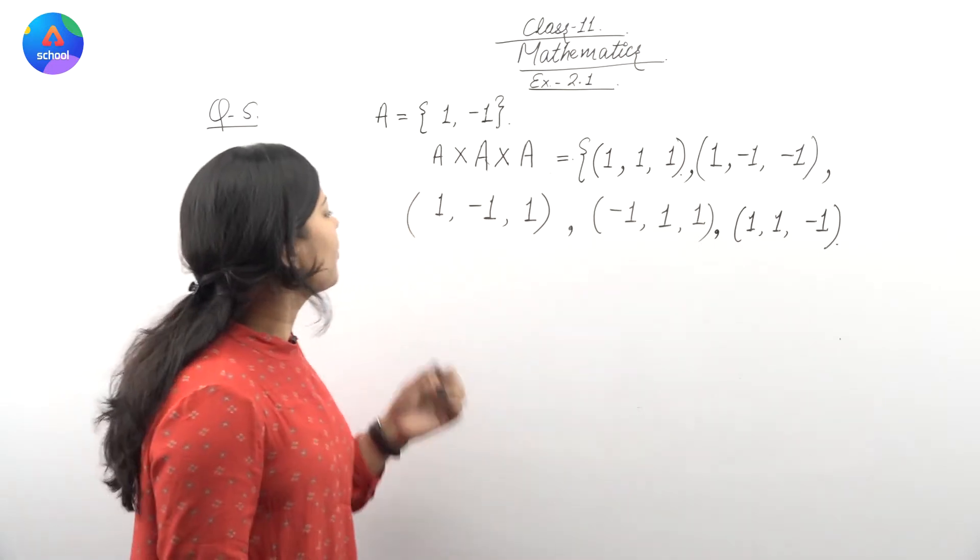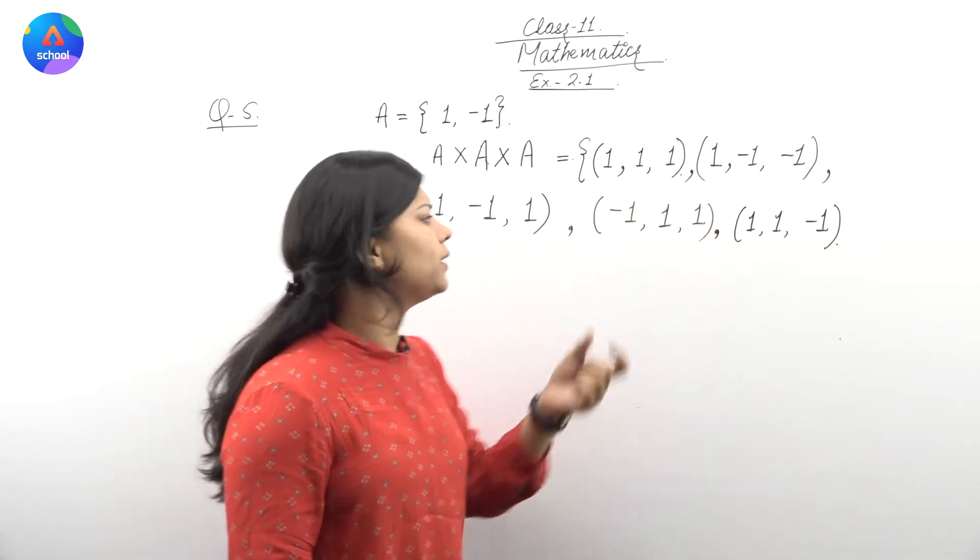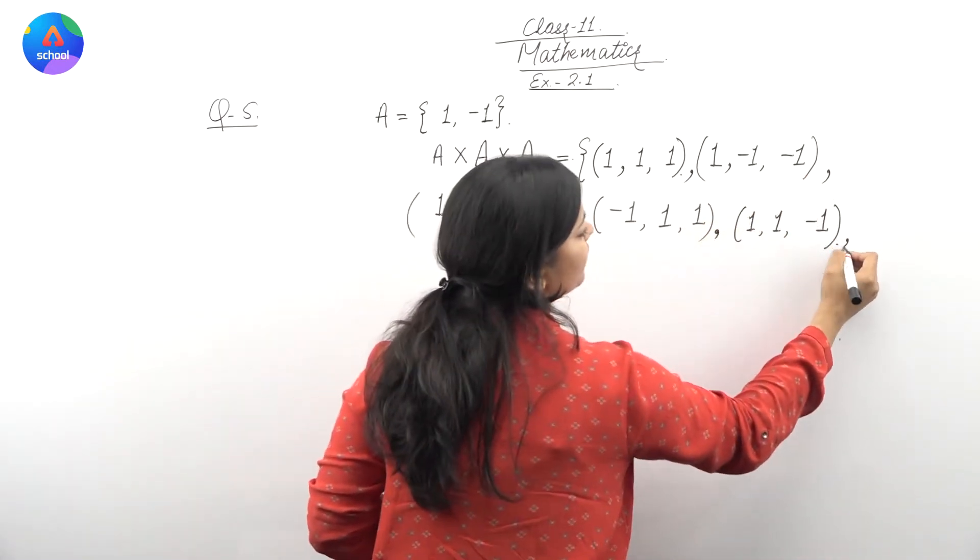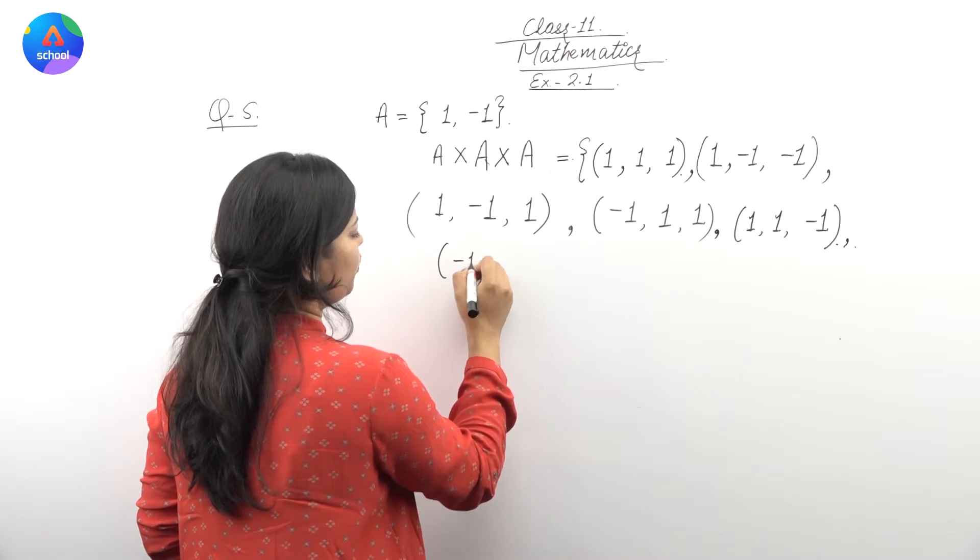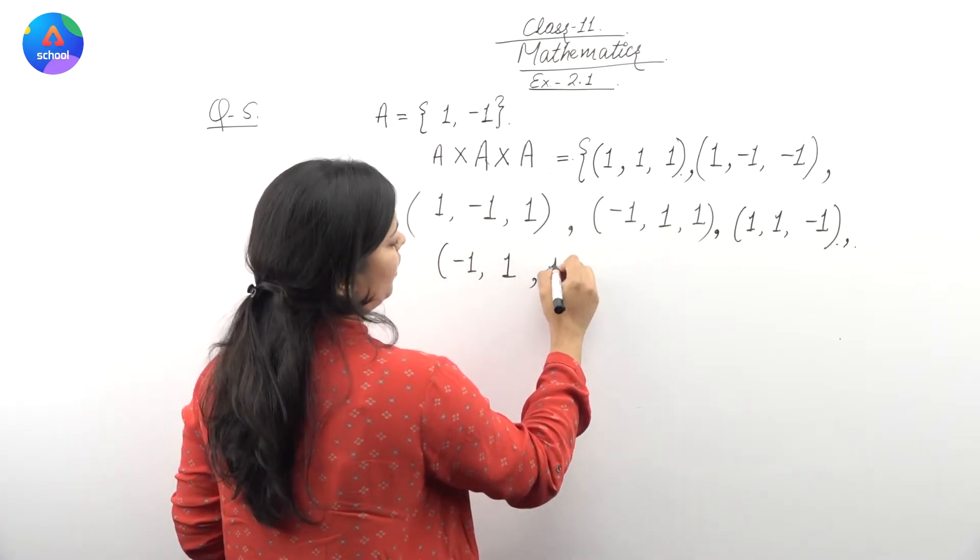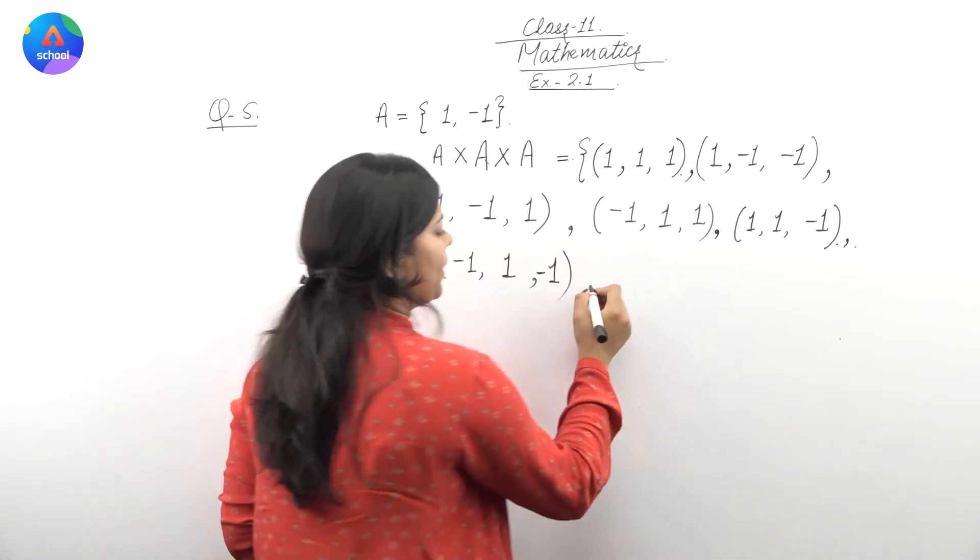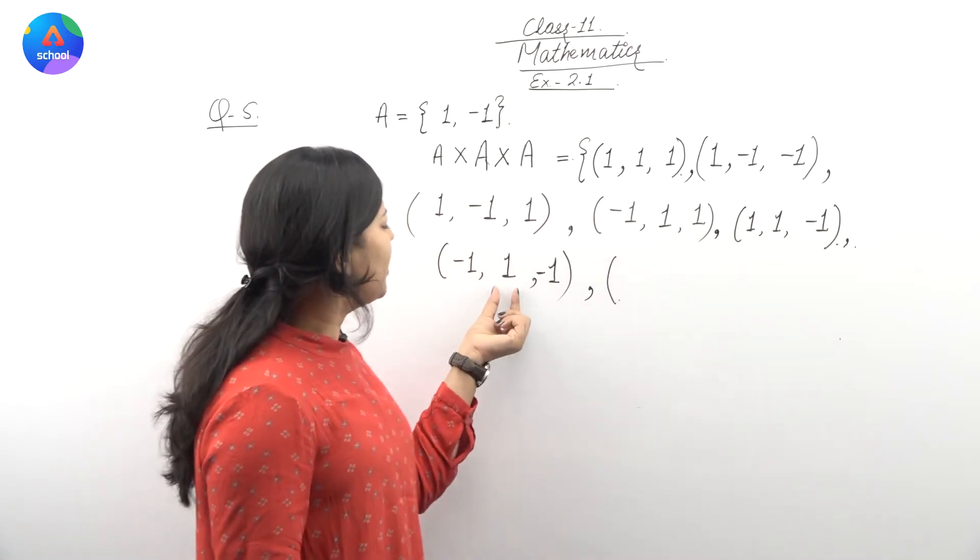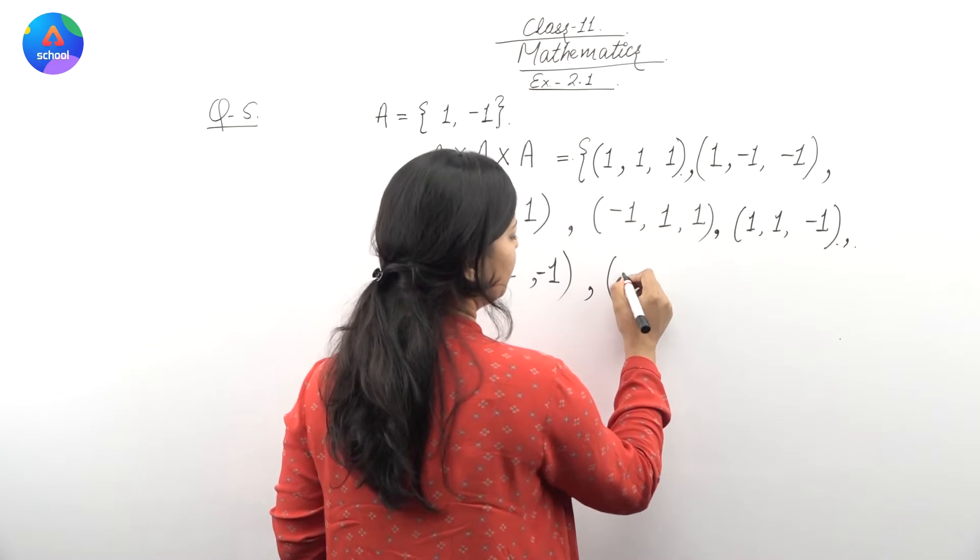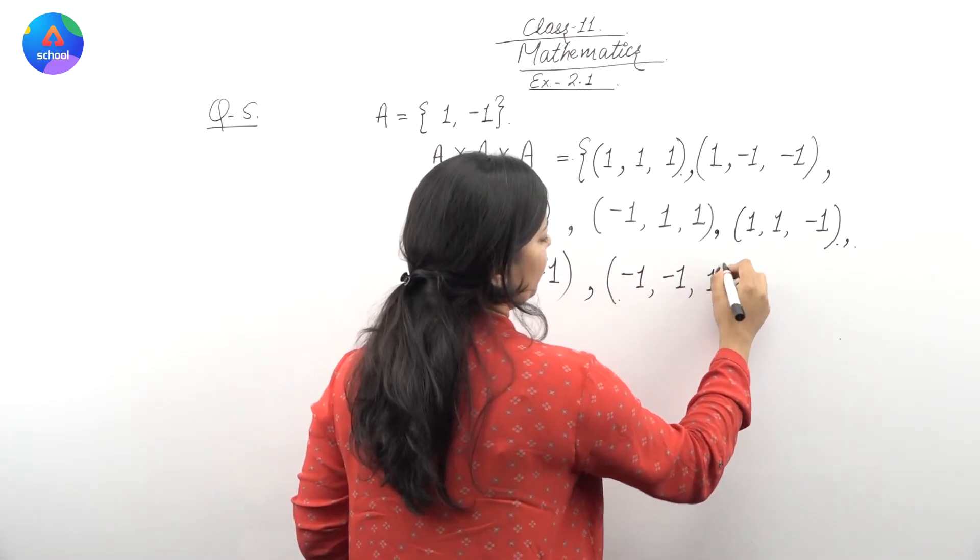Ab, yaha par dekhiye, is element meh, mai ne one first place pae liya tha, or baqi doonu minus one. To mai aengue ke elements likh rahe hun: minus one, one is bar mai ne second place pae liya hai, and minus one. Okay, humara agla element hooga, jis mein mai one ka jo place hai, first change karne wali ho, urusay third place lene wali ho. Minus one, minus one, and one.